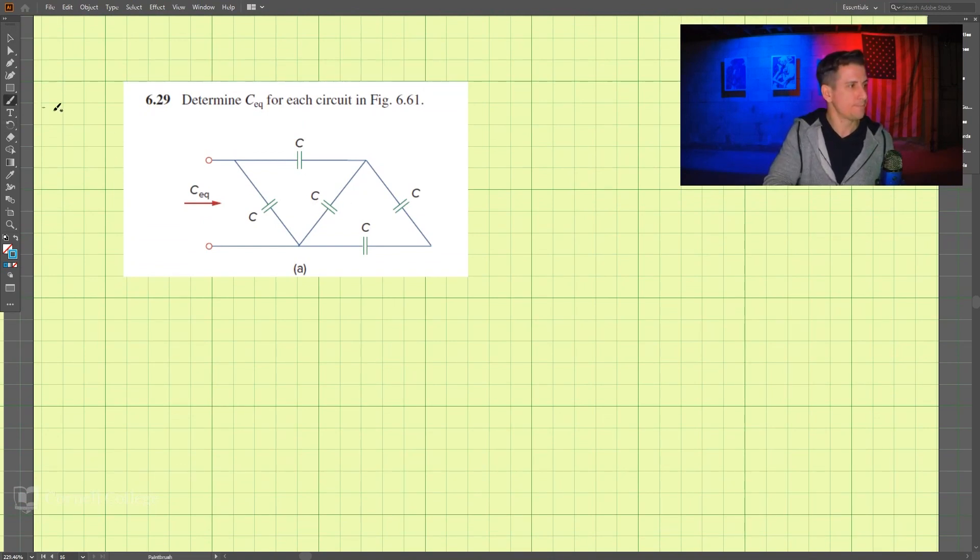Let's take a look here, and it looks like we can combine these because they're in series with each other. So let's work on combining those in series. We have C times C divided by C plus C. That looks like C squared over 2C, which is just simply C divided by 2.